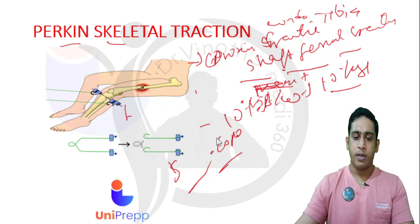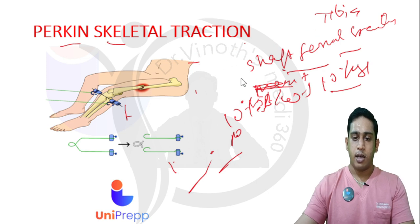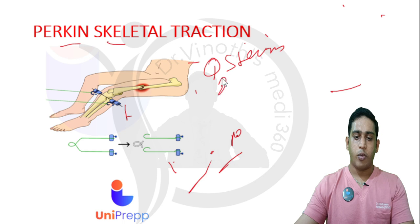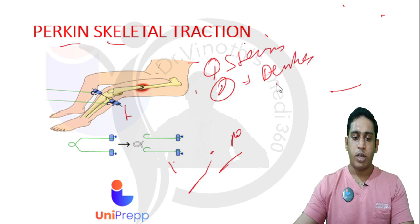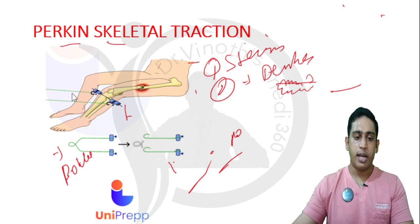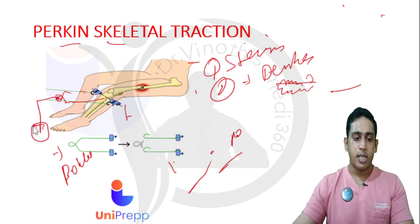One more point regarding the pins: in younger patients we prefer the Steinman pin. In older patients, since the bone might be osteoporotic, we prefer the Denham's pin because it contains serrations at the center for better bone hold. The Böhler stirrup is connected to the Steinman or Denham's pin, and the traction string is connected to it to suspend the required weight to reduce the fracture.